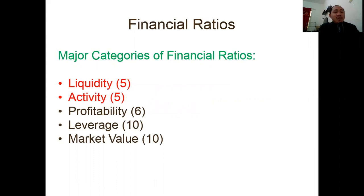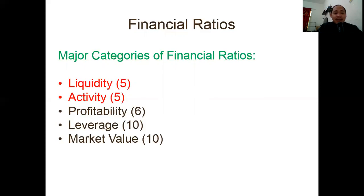We have major categories of financial ratios. In the previous video we covered liquidity ratios; this time we have activity ratios, and then we will move to profitability, leverage, and market value. Financial ratios are very helpful when analyzing the financial statements of a specific company. If you are a customer, you'll know if they can continuously provide value. If you are a shareholder, you'll know if you will get your return. These ratios depict a message about how the company is doing in terms of performance, liquidity, and business overall.